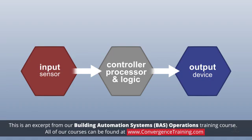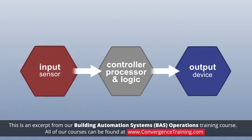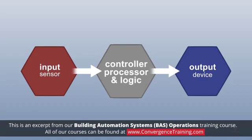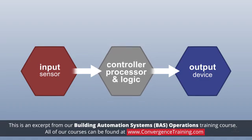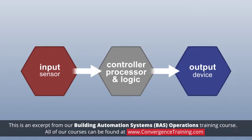The components work together in a process called the control loop. The input signal is received by a sensor or a device which is connected to the controller. The controller, which is processed by the logic, controls the response to the output device.